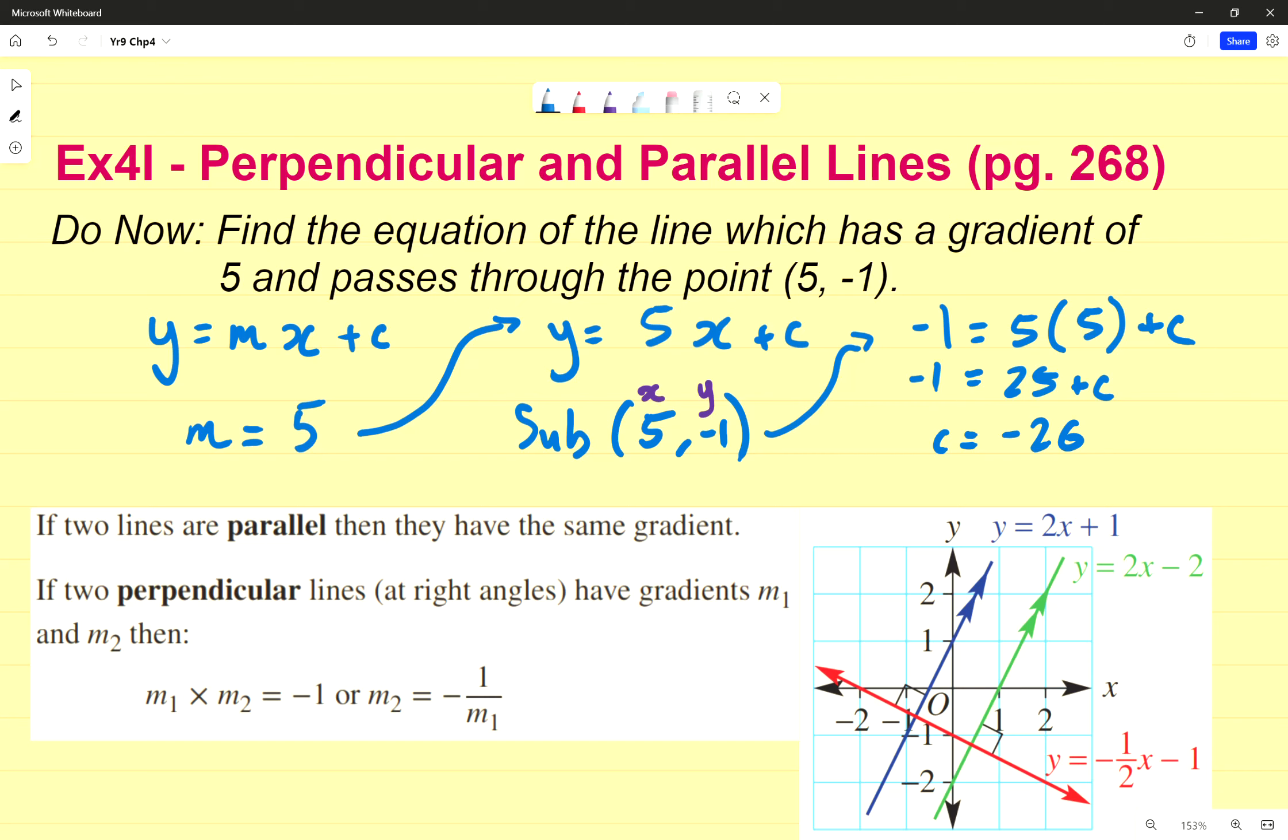A lot of students stop there. Why is that incorrect? Or rather, why would that not get full marks? Thank you very much. The question is to find the equation, not find the value of c. So finally, you would write y equals 5x minus 26. If you write plus negative 26, you're inherently wrong with that, but of course it is preferred that you do this.